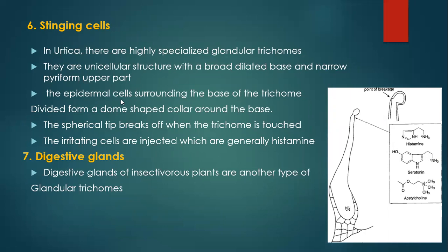Stinging hairs: in Urtica, these are highly specialized glandular trichomes. They are unicellular structures with a broad dilated base and a narrow pyriform tip. The epidermal cells surrounding the base of the trichome divide to form a bloom-shaped collar around the base. The spherical tip breaks off when the trichome is touched, and the irritating chemicals — generally histamine — are injected into the object that touched it.